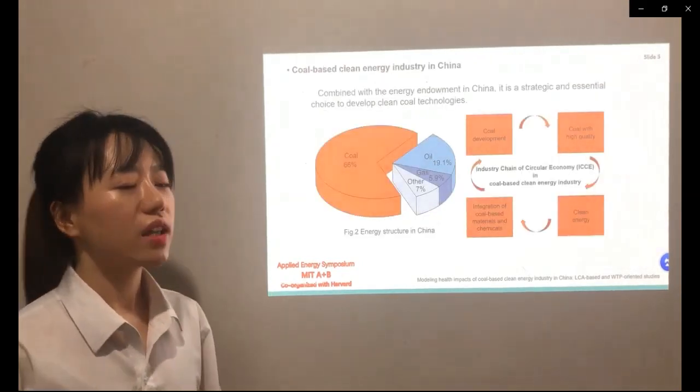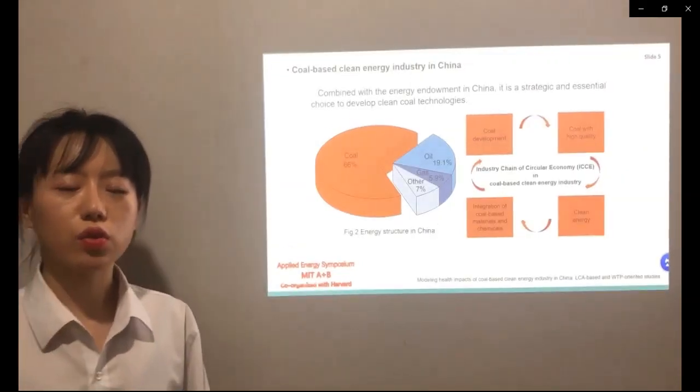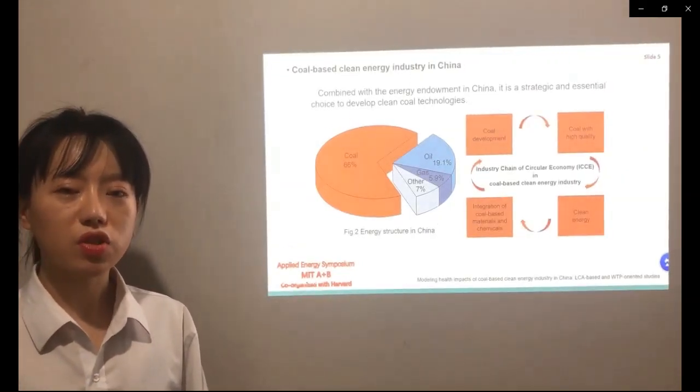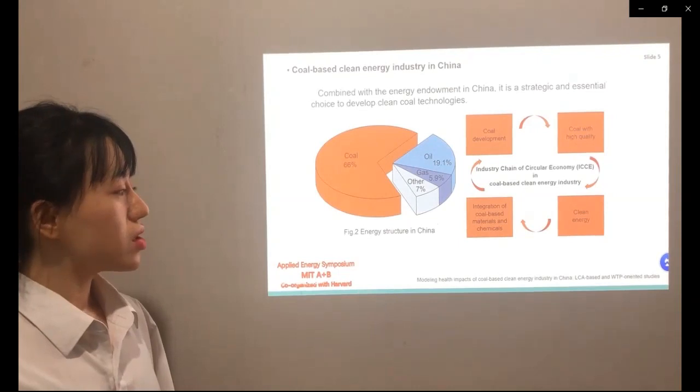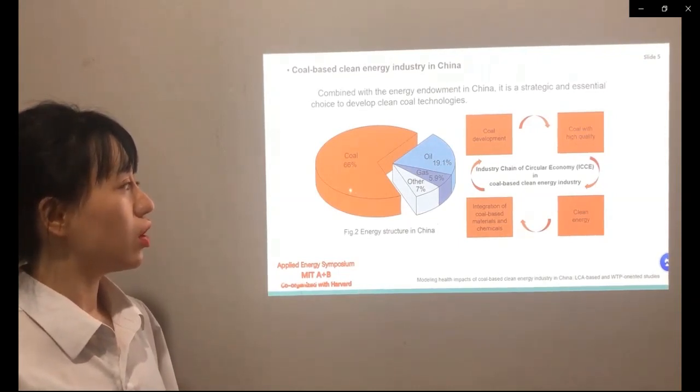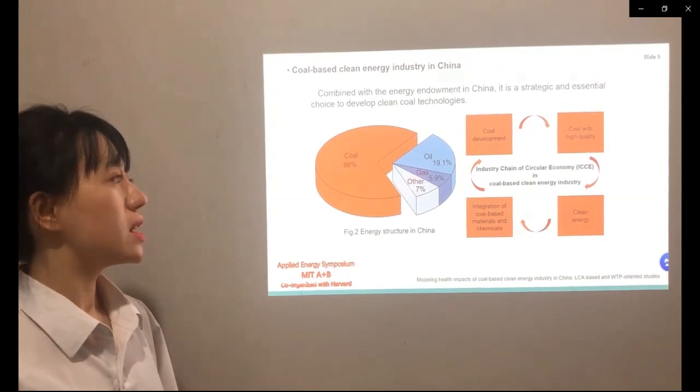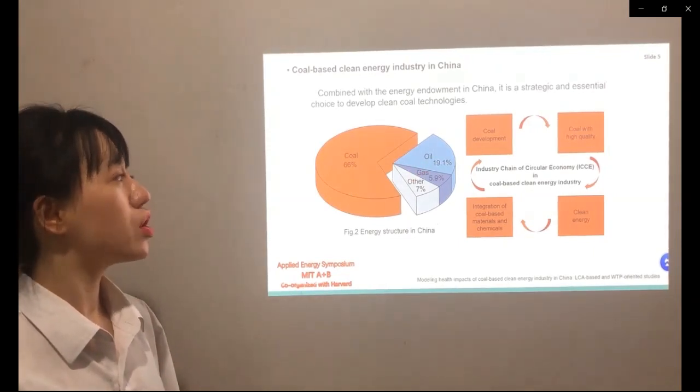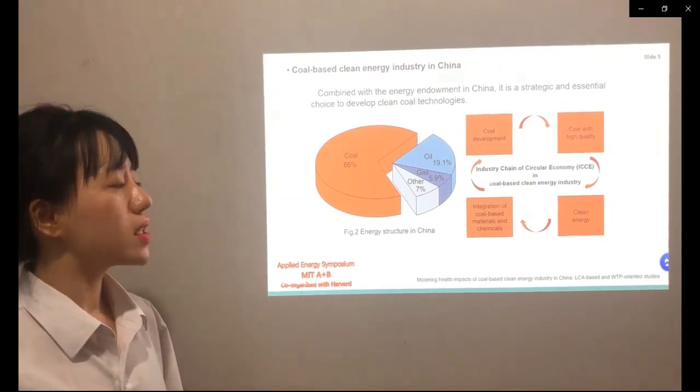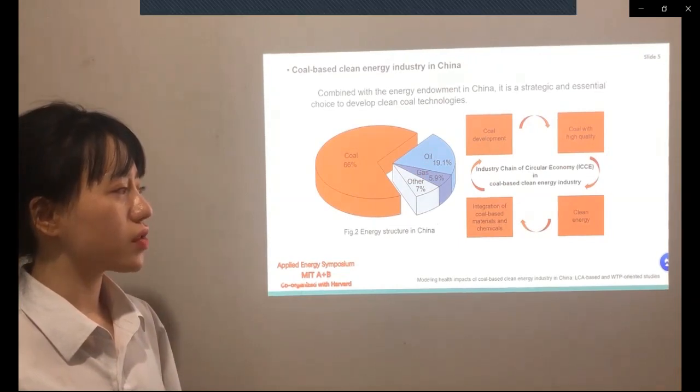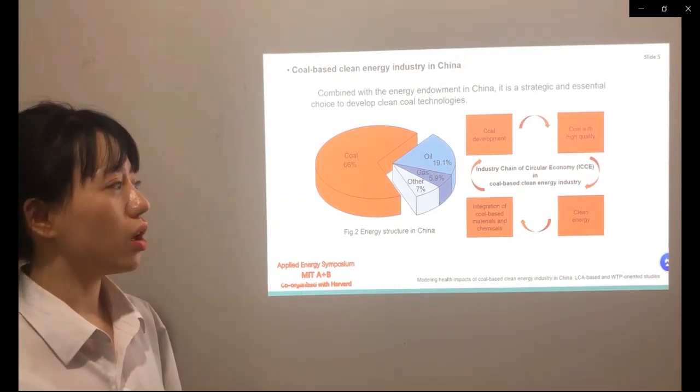In China, carbon dioxide emissions increase nearly 38.7% of global discharge. Therefore, China has taken many initiatives towards energy structure transformation objectives. The energy structure in China is rich in coal but poor in other resources. Thus, it is a strategic and essential choice to develop coal technologies in China with the purpose of a circular economy in coal-based energy industry.